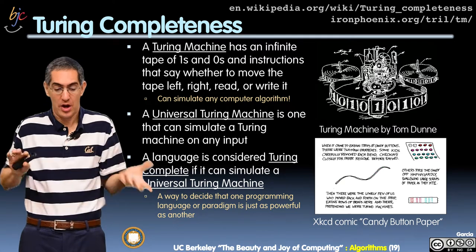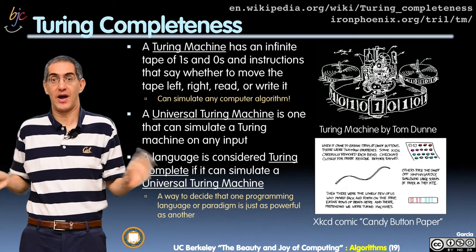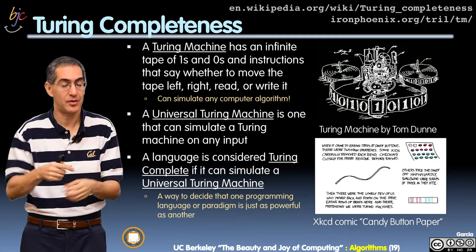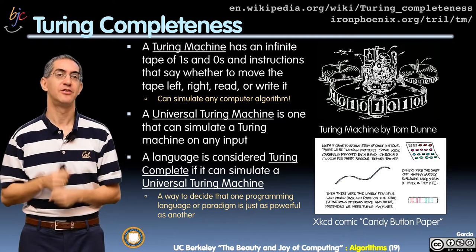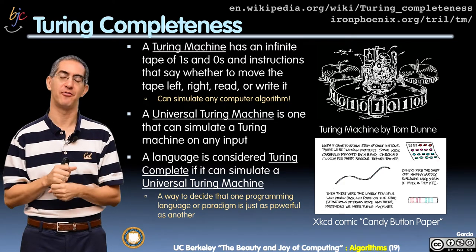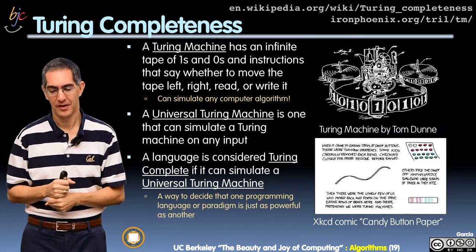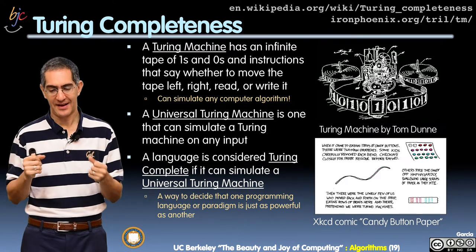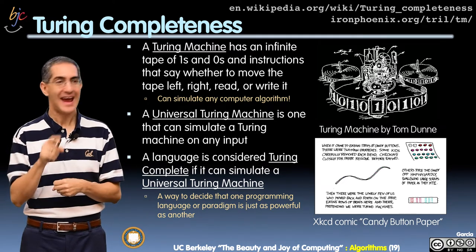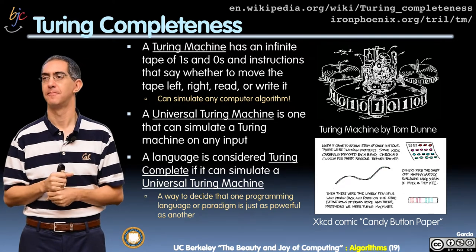You might say: if I read a 1, go write three times — write, write, write — and now look at what 1 that is again. So this idea of a Turing machine is really powerful. And one of the things that Turing proved was that you can simulate any computer algorithm with a Turing machine.